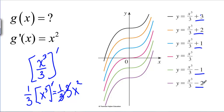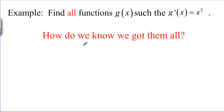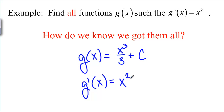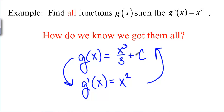When you take the derivative of a constant, it's 0. It should make good sense that if G of X equals X cubed over 3 plus any constant, then the derivative of G of X is going to be X squared. But that's still going in this direction. If we want to go back, how do we know we've got all functions G that will work? How do we know there isn't another function that has the derivative X squared?